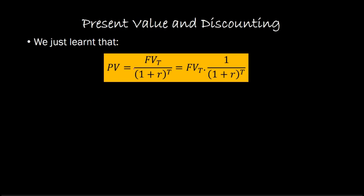In a previous video, we talked about how if you know of some amount that you're getting T years into the future and you're interested in determining its present value, you can use this formula: PV = FV_T divided by (1+r)^T. This expression can be rewritten by separating out the 1/(1+r)^T component. It's basically the same expression.